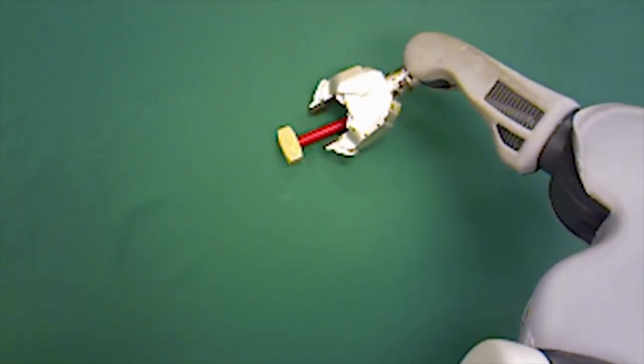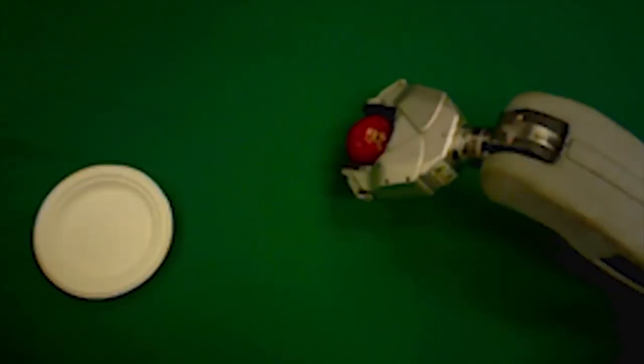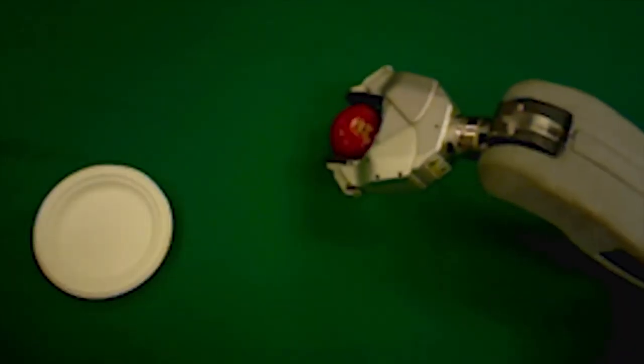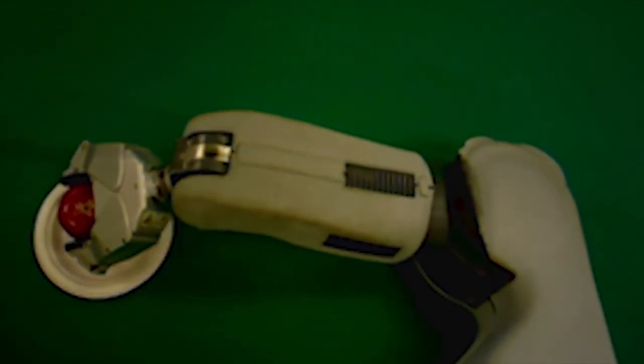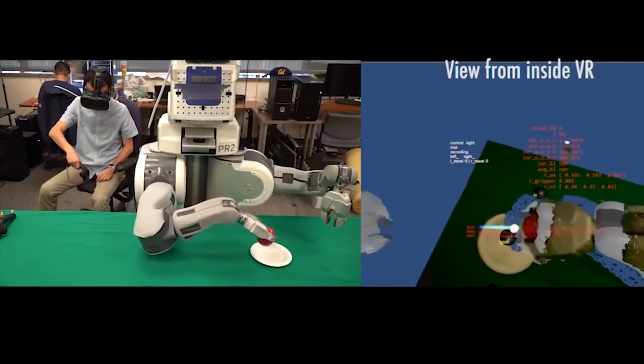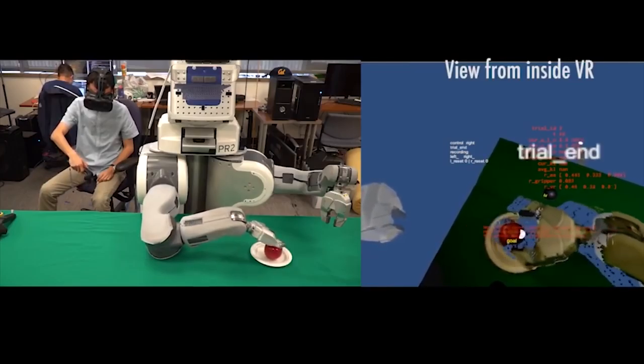Researchers trained Brett to do simple tasks, like picking up an apple and putting it on a plate, simply by showing him physically how to do it. The researchers use virtual reality to act as a sort of puppet master, guiding Brett's arm through the movements.